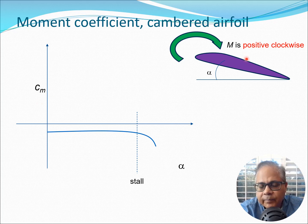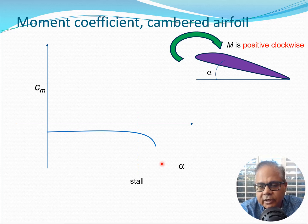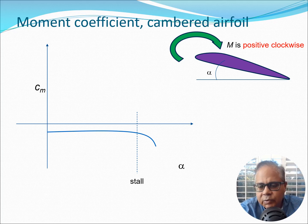Next is the moment coefficient CM. Before discussing it, let's define the notation: for an airfoil section, moment is positive clockwise. For a cambered airfoil, the moment is a small negative number. After stall, there is a sudden fall in moment, which can generate large torsional loads. In the linear region, the moment is somewhat constant, though it changes to some extent.